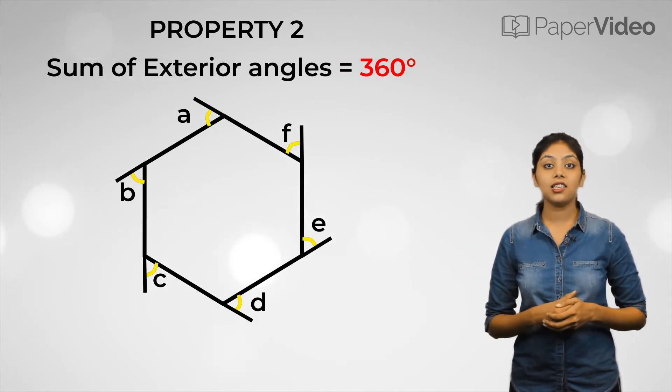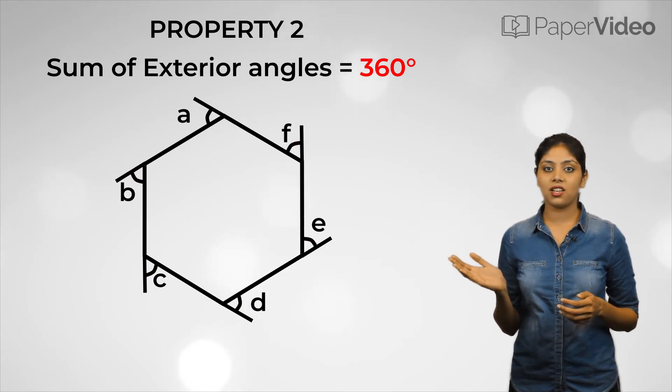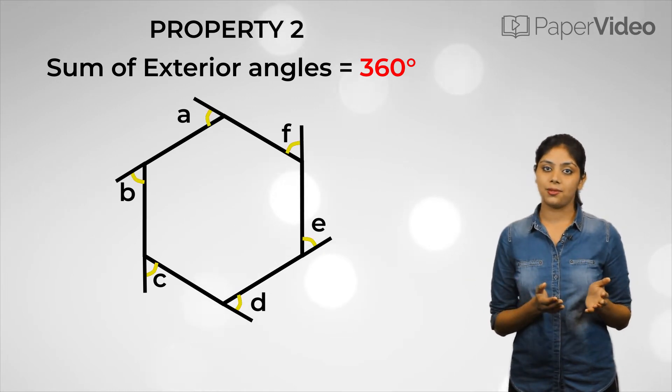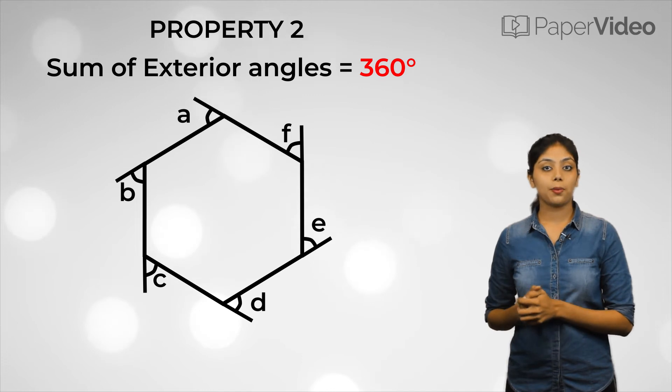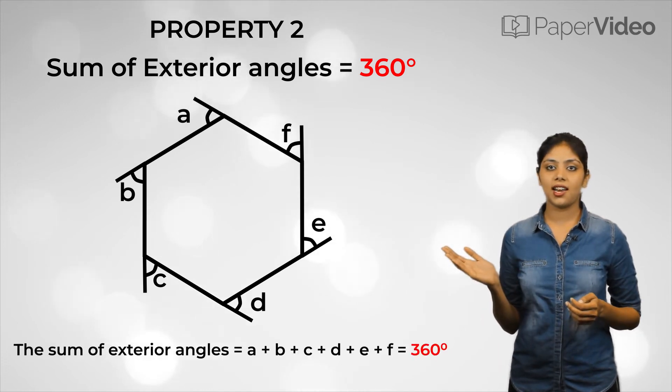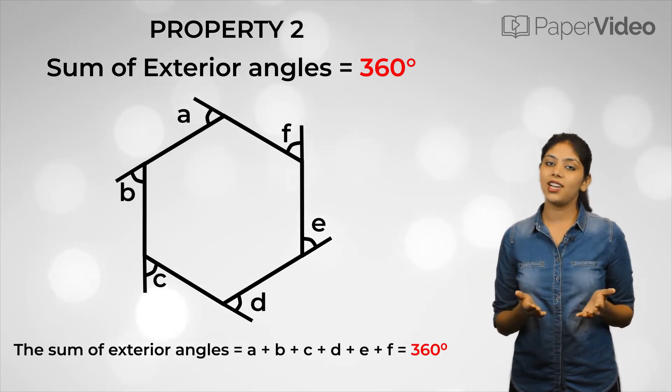For example, consider the exterior angles of a hexagon when its sides are produced. So, according to the property, the sum of the exterior angles of the polygon will be 360 degrees.